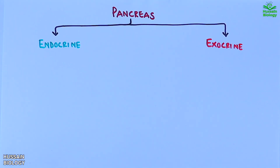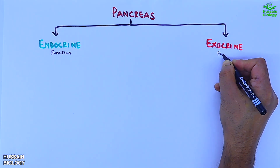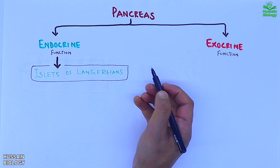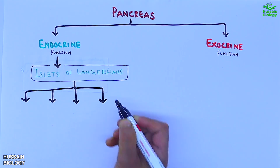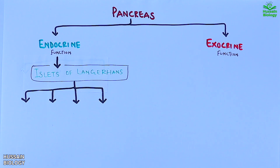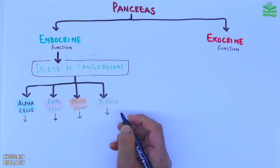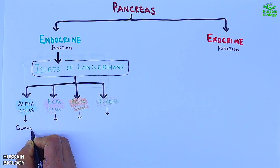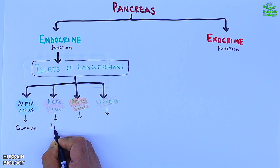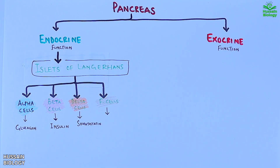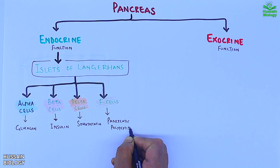The pancreas has dual functions: endocrine functions and exocrine functions. The endocrine functions are attributed to the islets of Langerhans, which is a region on the pancreas that has endocrine cells. It has four different types of cells: alpha cells, beta cells, delta cells, and F cells.